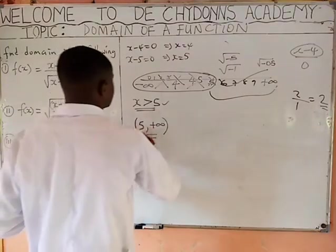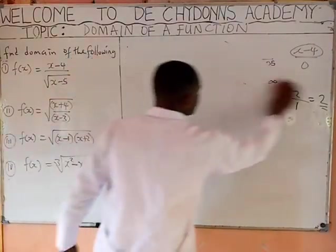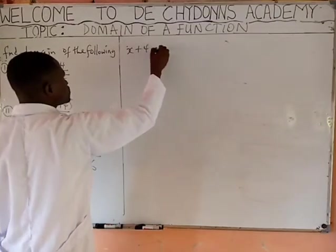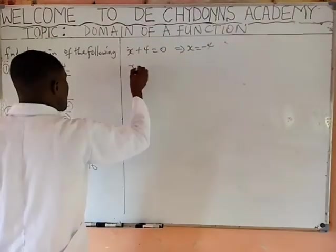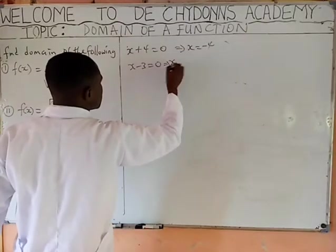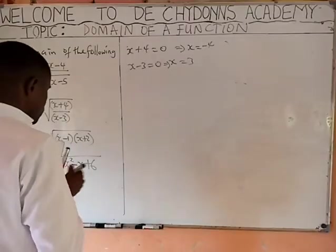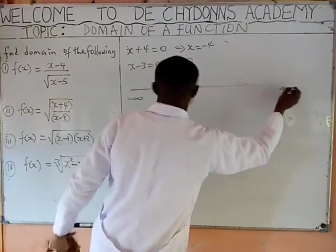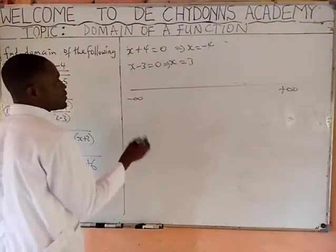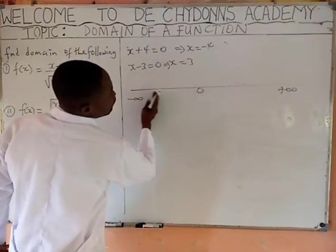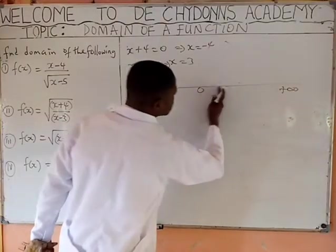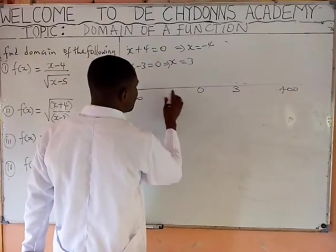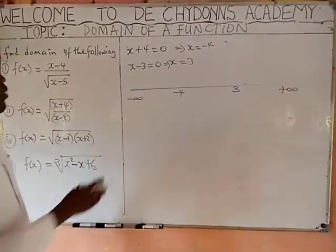We go to the second question. Make x plus 4 equal to 0 — you get x equal to minus 4. Make x minus 3 equal to 0 — you get x equal to 3. Draw your number line with negative infinity on the left and positive infinity on the right. Remember 0 is in the middle; negative numbers are to the left and positive numbers to the right. Locate 3 on the positive side and minus 4 on the negative side.